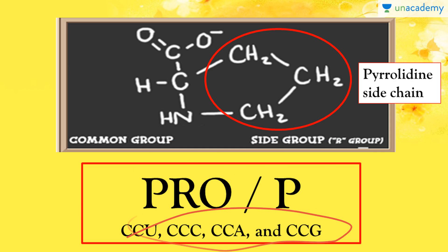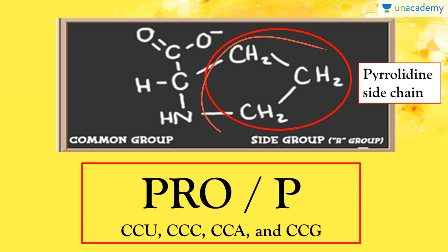Proline is unique amongst all other amino acids because it is not a primary amino acid — that is, only one carbon bond to the amine nitrogen is not present here. Rather, it is a secondary amino acid, and sometimes it is also known as an imino acid, because the side chain is attached to two of the groups.